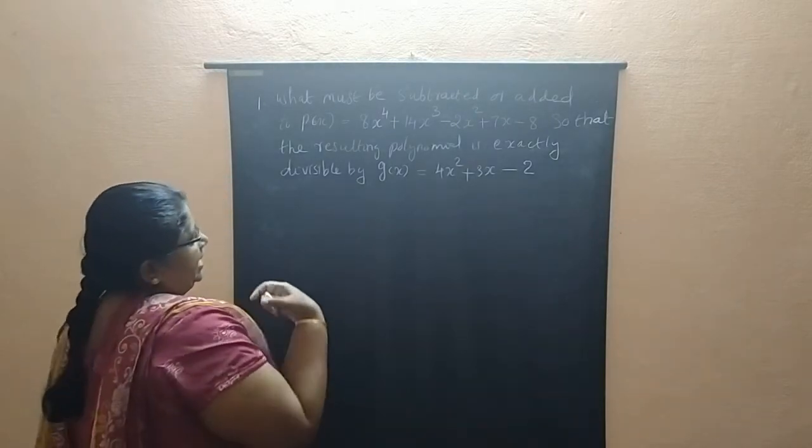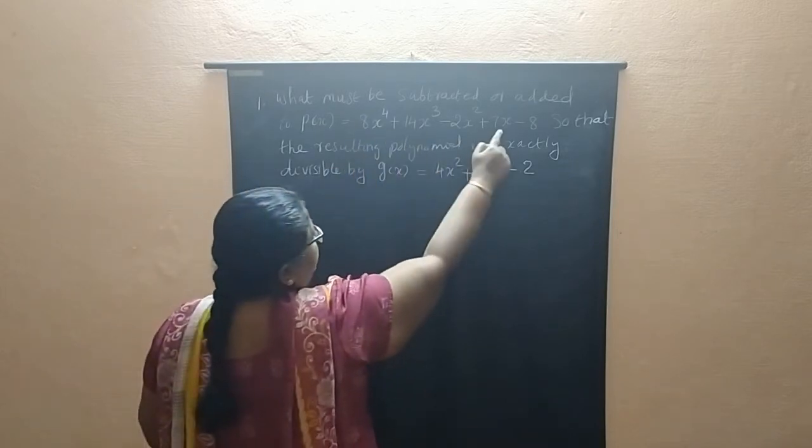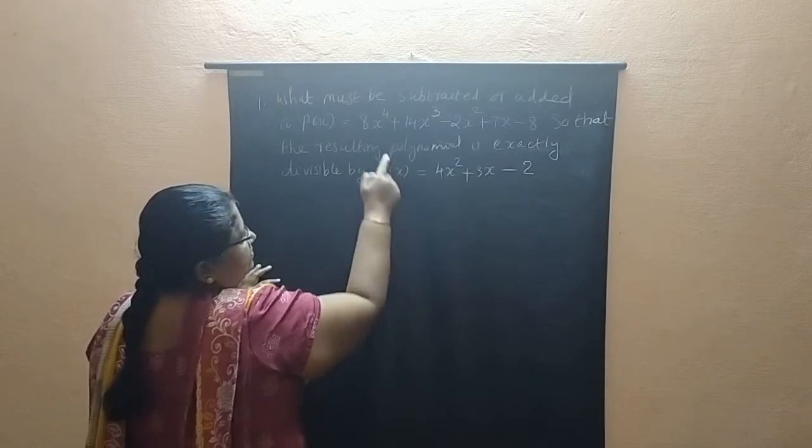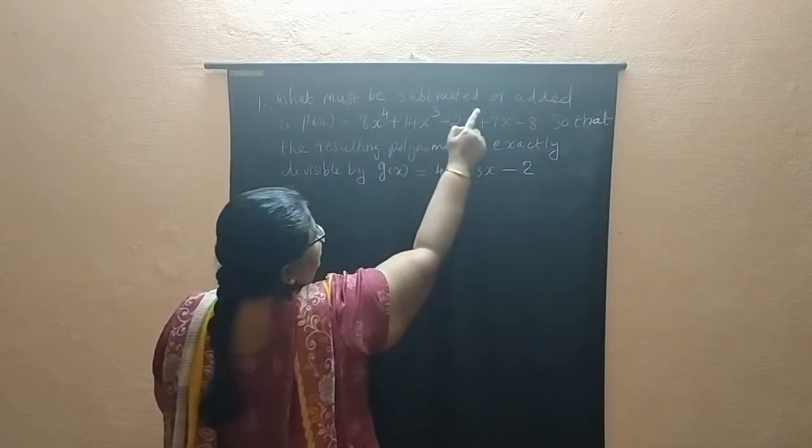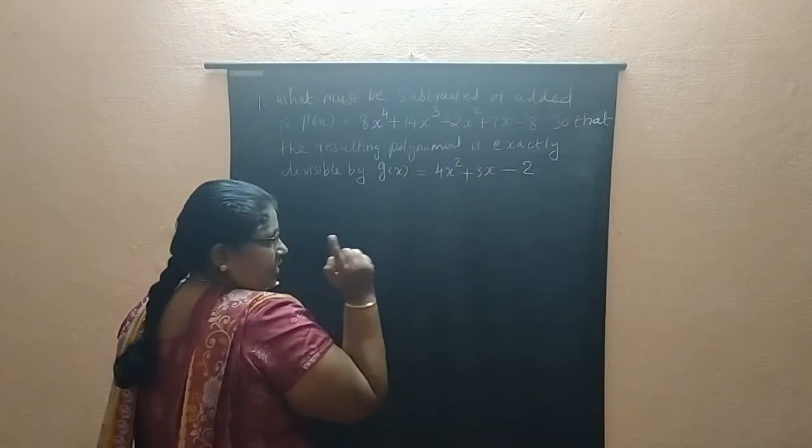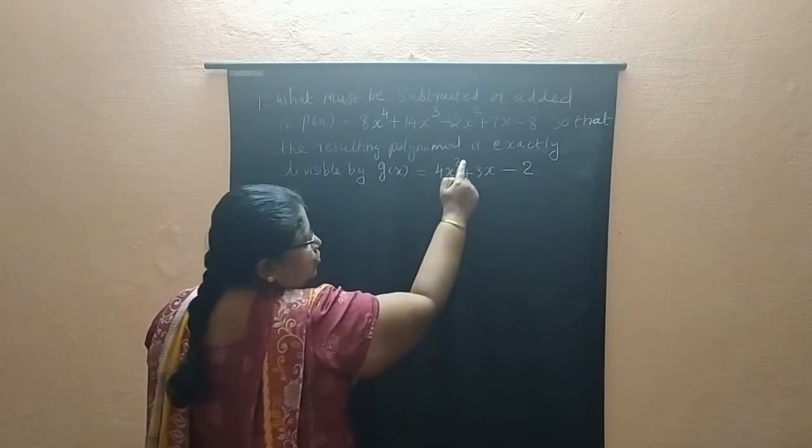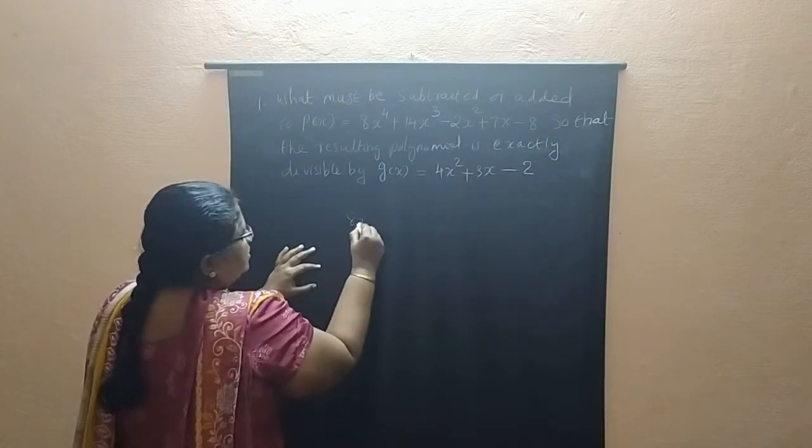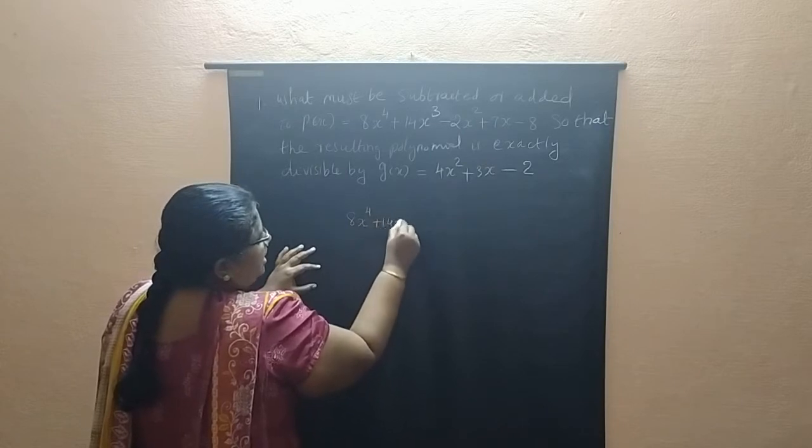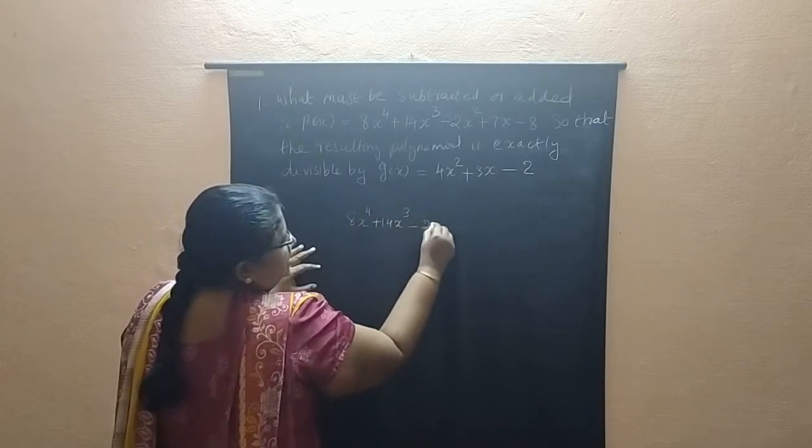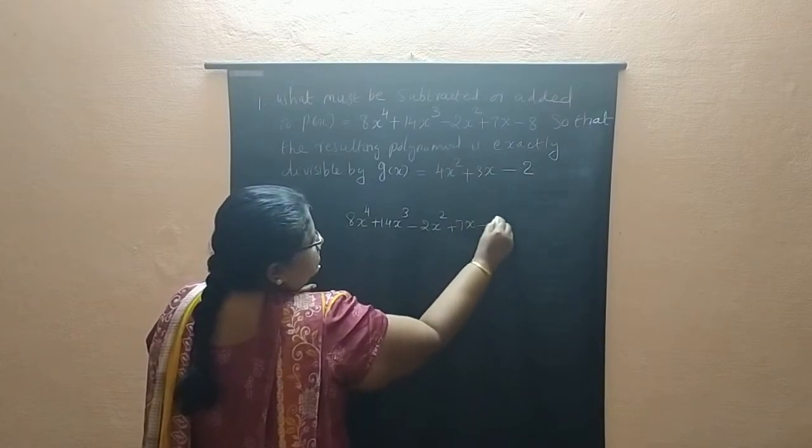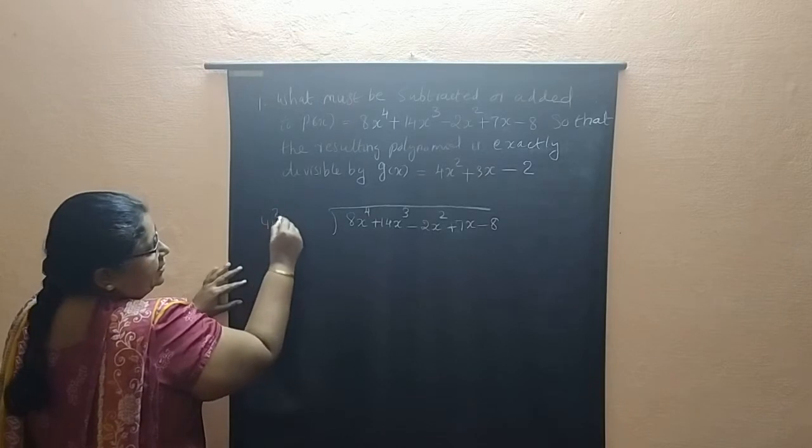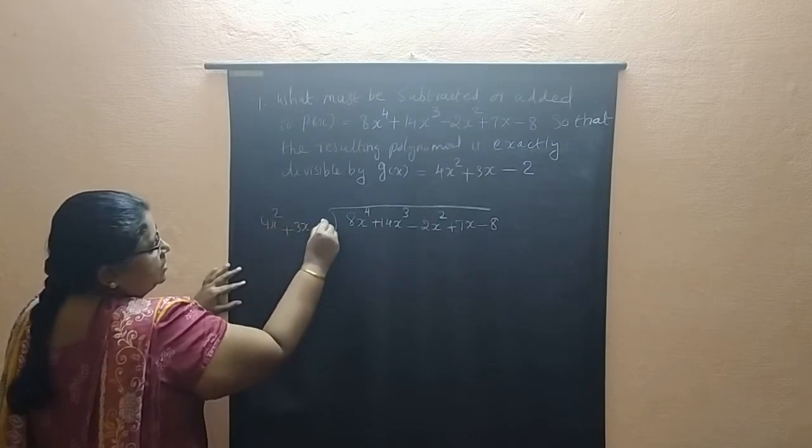So for that again you have to divide the given polynomial P of X with G of X. So for division it is 4, 3, 2, 1, 0 order correct. So write 8X to the power 4 plus 14X cube minus 2X square plus 7X minus 8 divided with 4X square plus 3X minus 2.